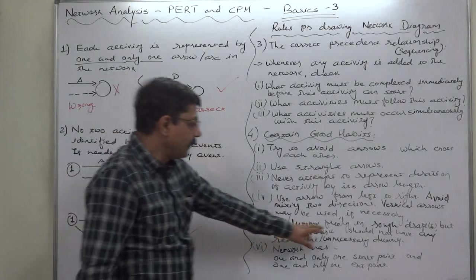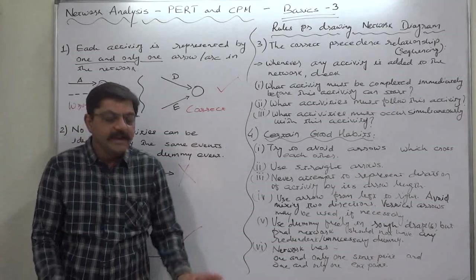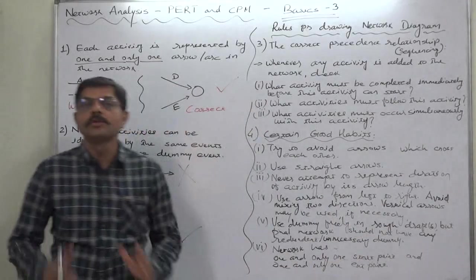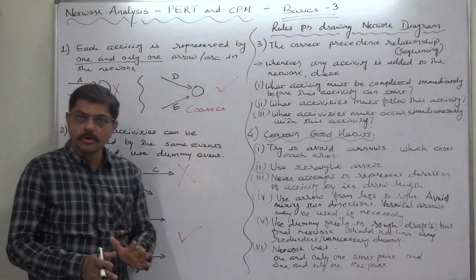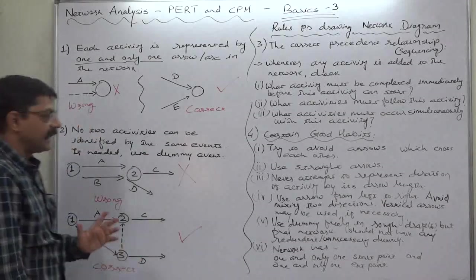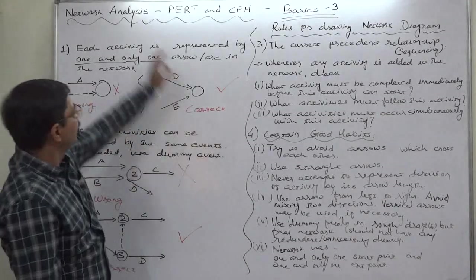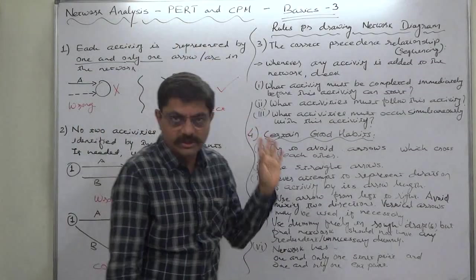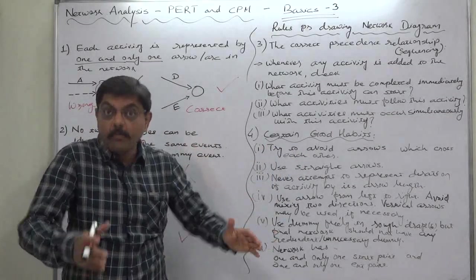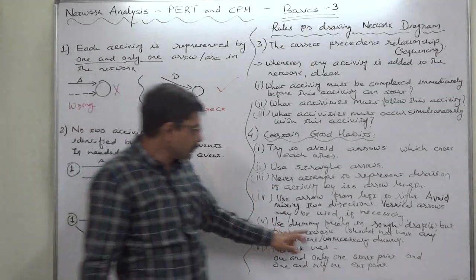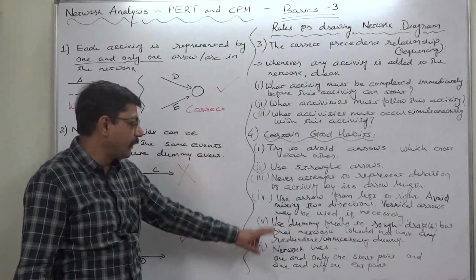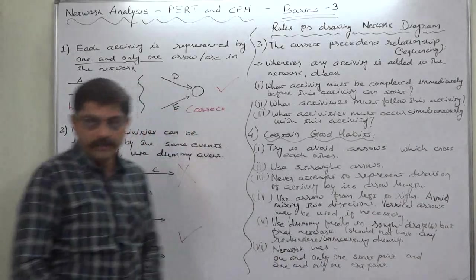Number five, use dummy freely in rough draft. Many students, many teachers actually surprised with the term rough draft. Including myself, no one is able to draw the final draft directly. No one is able to draw directly the final draft of any network analysis or PERT chart. Never. We have to draw, I can say, more than one rough drafts. Use dummy freely in rough draft or drafts. But, final network should not have any unnecessary or redundant dummy.